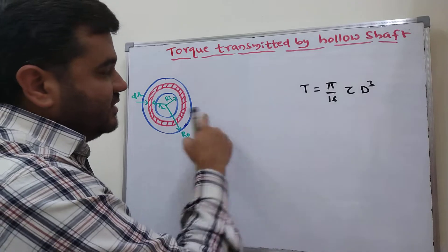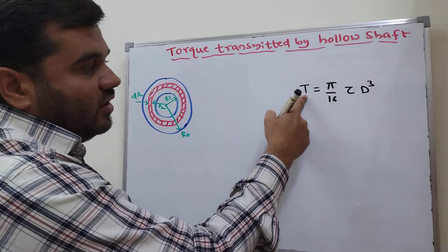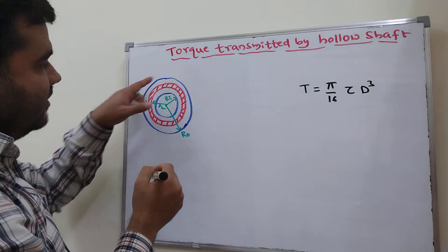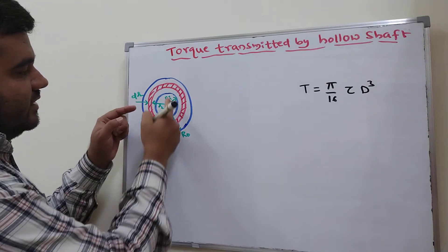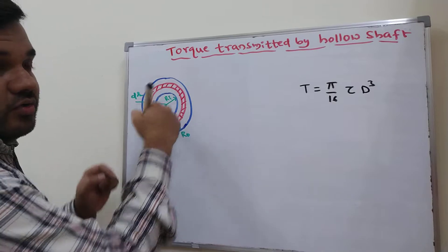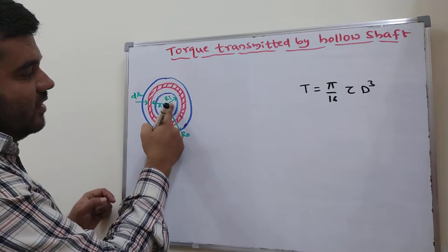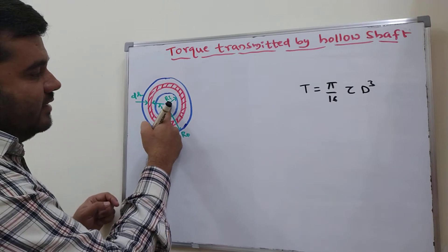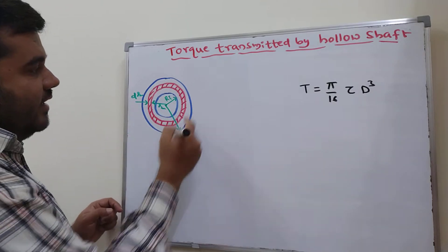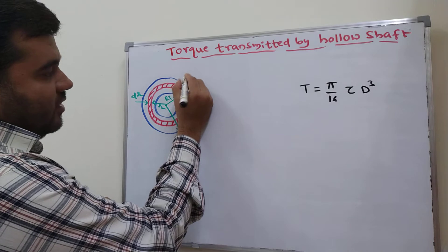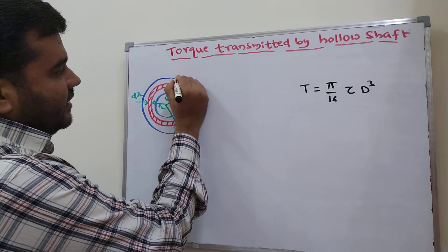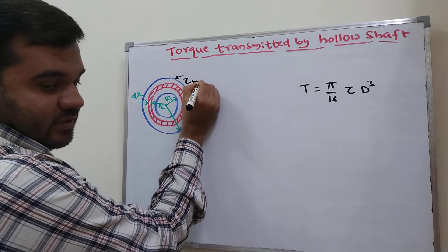In the same way, today in this video, we will derive the torque for the hollow shaft. Consider the hollow shaft shown in the figure. The inside radius of the hollow shaft is Ri and the outside radius is Ro. The maximum shear stress developed at the outside (at Ro) is τ.